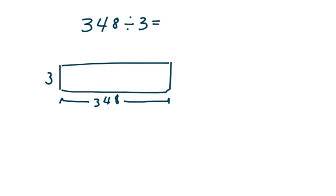Let's get started with 348 divided by 3. Draw this model on your table. You need a rectangle. Underneath we're going to label it 348 because the total area of this rectangle is 348 square units.